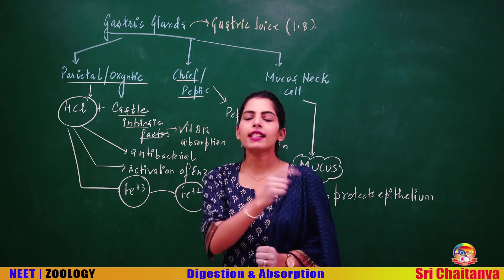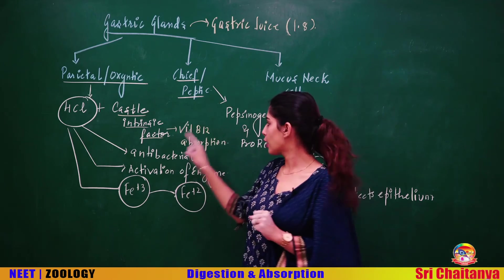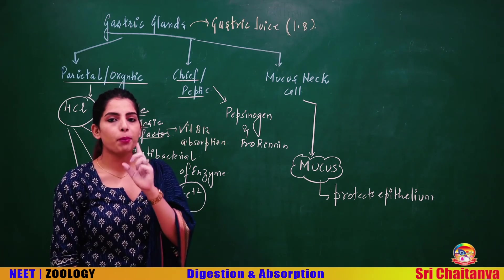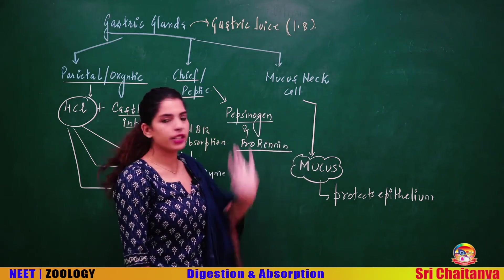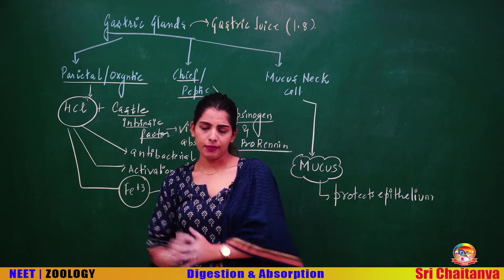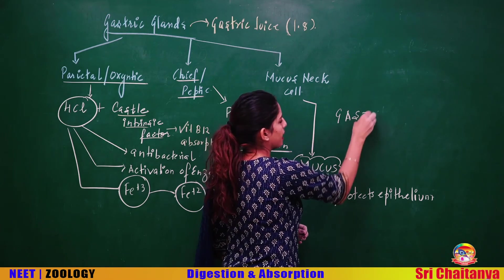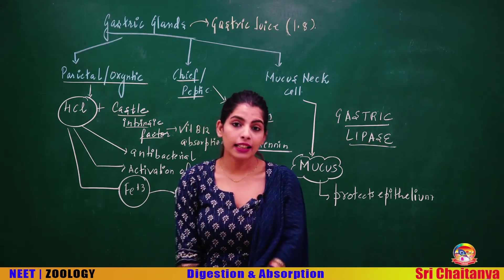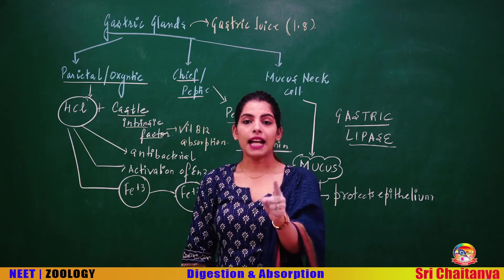The Castle's intrinsic factor secreted by parietal cells is responsible for the absorption of an extrinsic factor — vitamin B12. The large amount of mucus secreted by mucus neck cells protects the gastric epithelium from the acidic HCl. Also note that some gastric lipases are also secreted from the stomach — a very small amount of fat digestion takes place here for the first time.